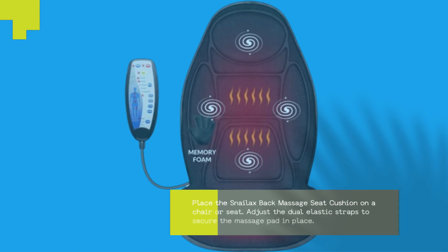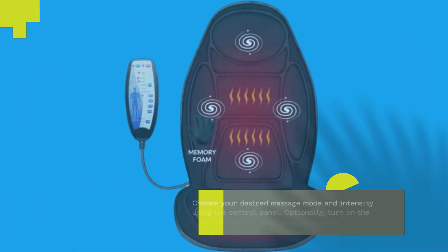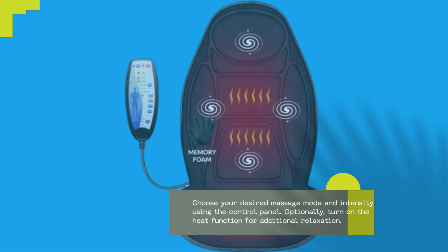Place the Snailax Back Massage Seat Cushion on a chair or seat. Adjust the dual elastic straps to secure the massage pad in place. Choose your desired massage mode and intensity using the control panel.